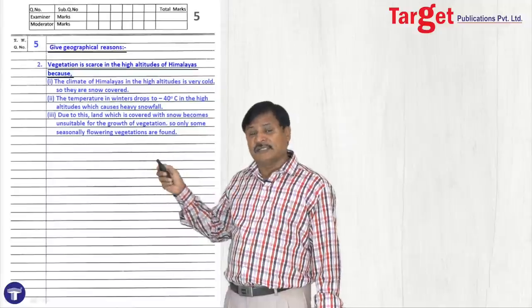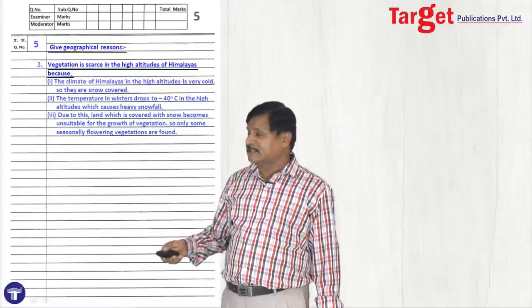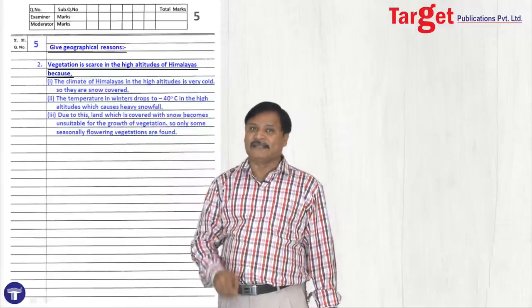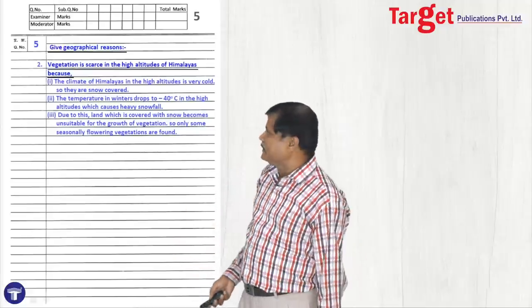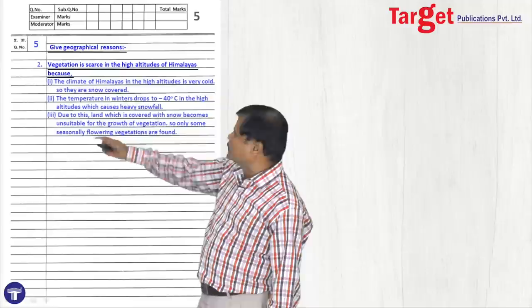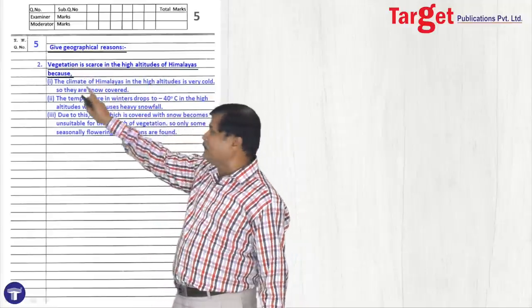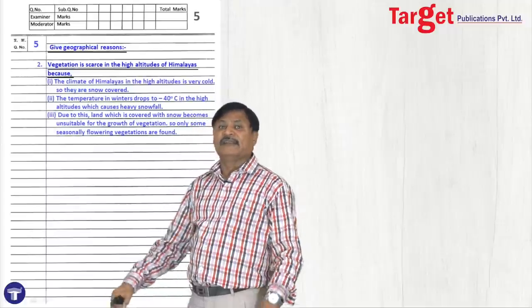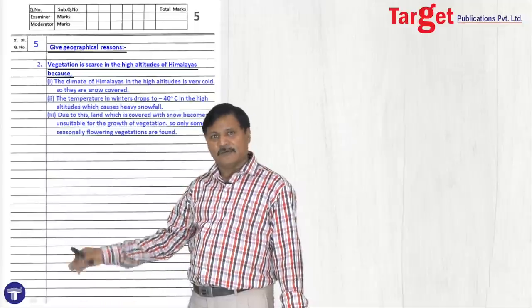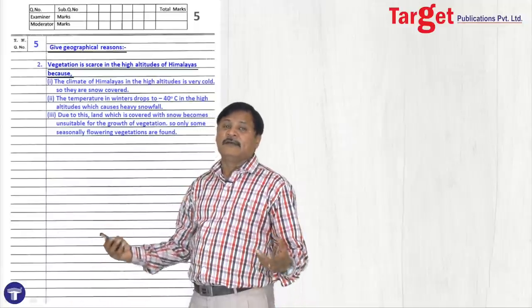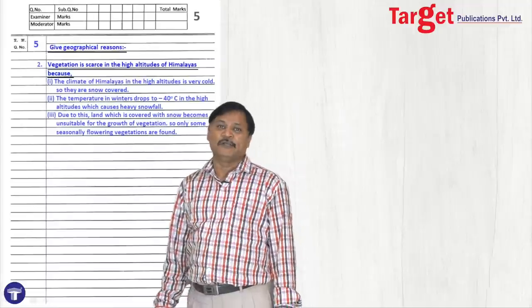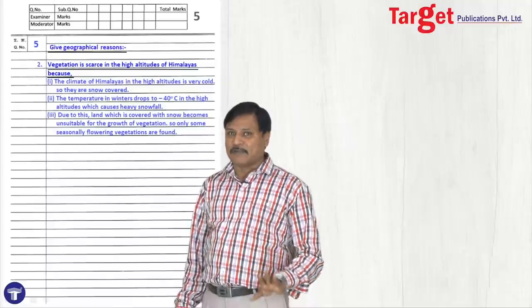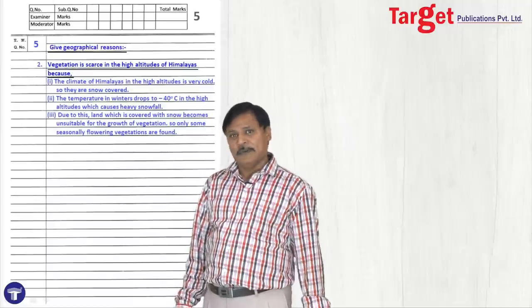Some students leave lines between the subheadings of the same answer. Example: explain the physical divisions of India. They write A — Himalayas, explain in five sentences, then leave a line, then B — North Indian Plain, five lines, then C — Peninsular Plateau. That is wrong. You should not leave lines between the points of the same answer or between the subheadings of the same answer.